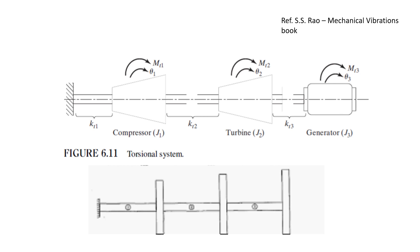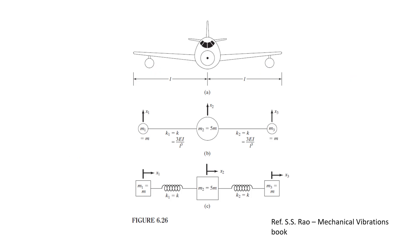What is more important in vibration courses is understanding how to model physical systems. It is not enough to just learn how to find natural frequencies and mode shapes. You need to understand how a physical system like a compressor, turbine, and generator on a shaft is modeled as a three-degree of freedom system. Here is an example of an aeroplane modeled as a three-degree of freedom system, where the central fuselage is modeled as m2 and the two wing portions as m1 and m3.